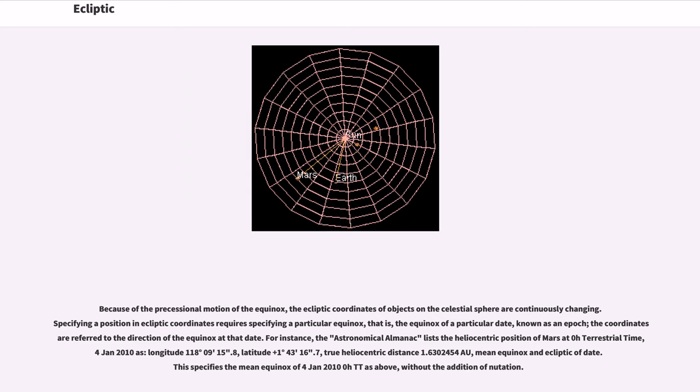Specifying a position in ecliptic coordinates requires specifying a particular equinox, that is, the equinox of a particular date, known as an epoch. The coordinates are referred to the direction of the equinox at that date. For instance, the Astronomical Almanac lists the heliocentric position of Mars at 0 hours terrestrial time, January 4, 2010 as longitude 118 degrees 09 minutes 15.8 arcseconds, latitude plus 1 degree 43 minutes 16.7 arcseconds, true heliocentric distance 1.6302454 astronomical units, mean equinox and ecliptic of date. This specifies the mean equinox of January 4, 2010 0 hours TT as above, without the addition of nutation.